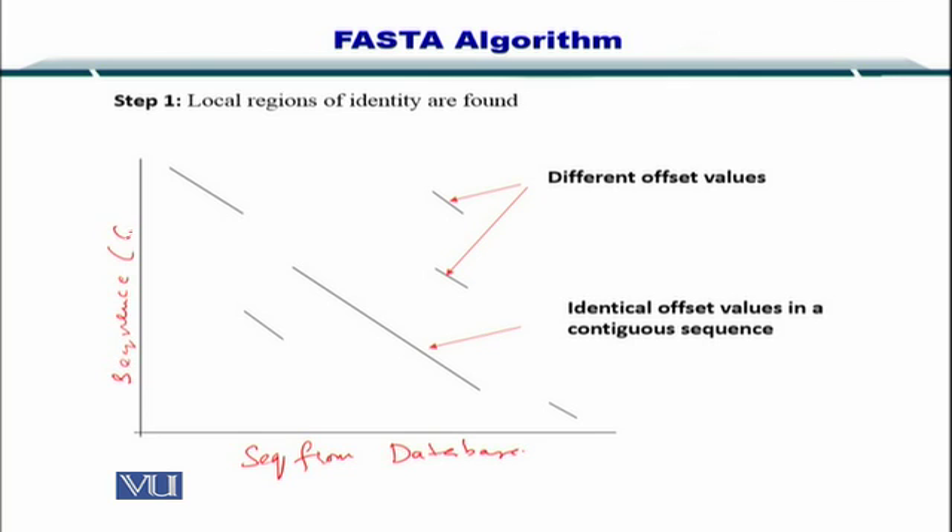To start with the algorithm, let's put your sequence from the database on one side and your query sequence on the other side. You will have multiple sequences that will be compared with the query one by one. Let's consider one sequence at a time and assume that there is some portion within the database sequence that matches very nicely with the query.